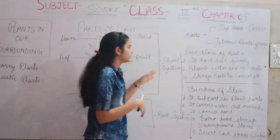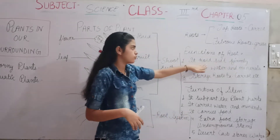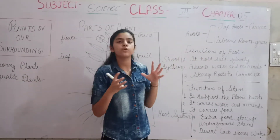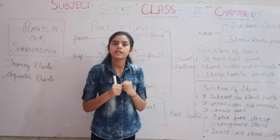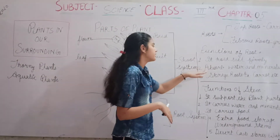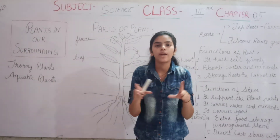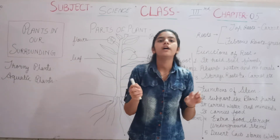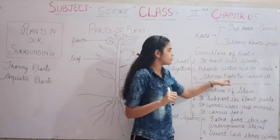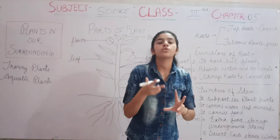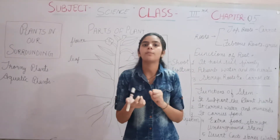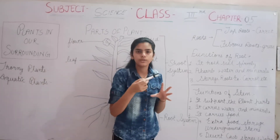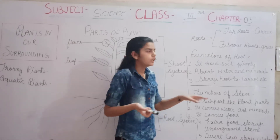Now we will go to the functions of roots. First, roots hold the soil firmly. The roots absorb water and minerals from the soil. Some plants have storage roots — roots that store food. For example, carrots have a root-like structure that stores food which is eaten by us.